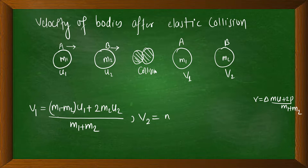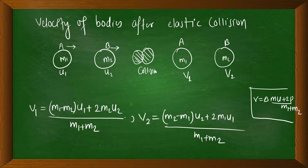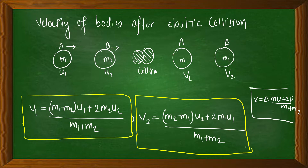And if we calculate V2, the mass is M1 — 2 times the momentum U1 divided by total mass M1 plus M2. The velocity after the elastic collision is called del of mass times U2.